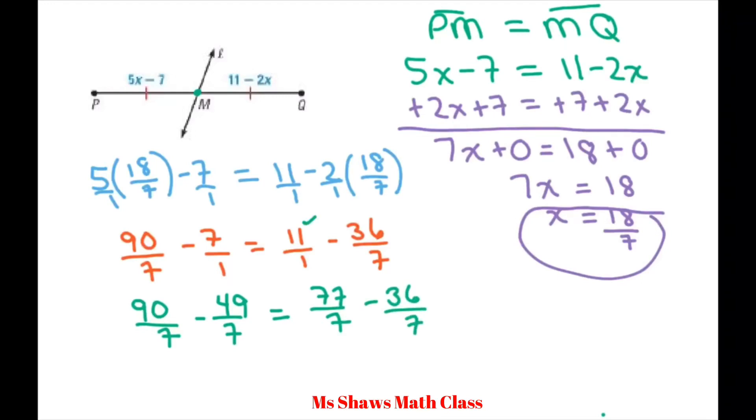Let's see, I'll use purple. 90 minus 50 is 40, so 90 minus 49 is going to be 41. And 77 minus 36 is also 41.